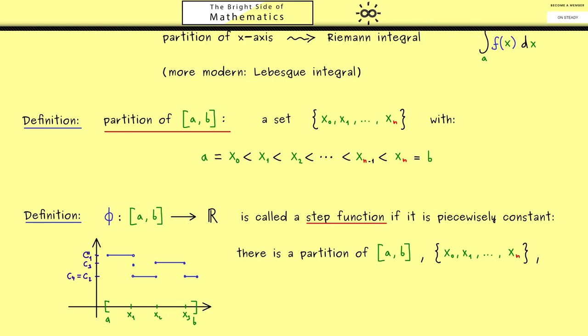Indeed, what could happen is that some values coincide. So here we have that the value in this interval is the same as in this one. This is not a problem. The important thing is that for each interval we have such a number c_j, which means we have n of them.